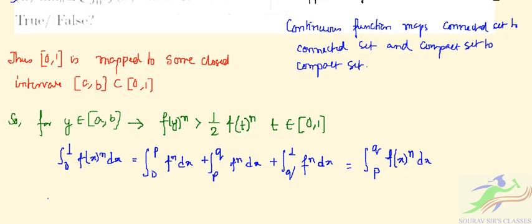So we have 0 which is less than or equal to 1/2 times f(t)^n times (q minus p), which is also less than or equal to integral from 0 to 1 of f(x)^n dx.